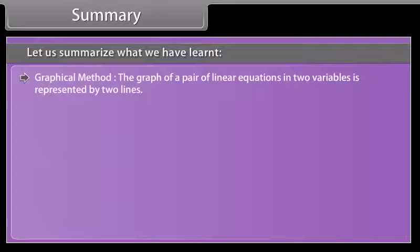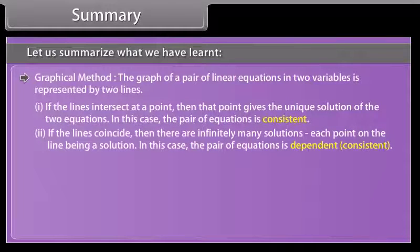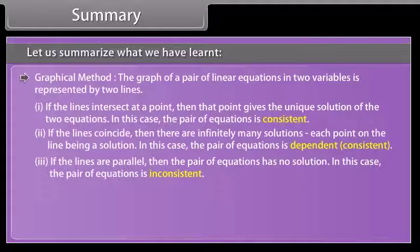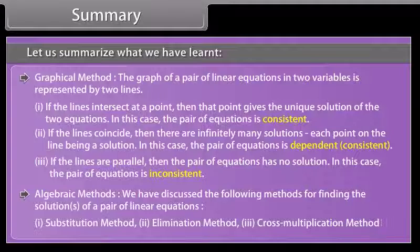The graph of a pair of linear equations is represented by two lines. 1. If the lines intersect at a point, that point gives the unique solution — the pair is consistent. 2. If the lines coincide, there are infinitely many solutions — the pair is dependent and consistent. 3. If the lines are parallel, the pair has no solution — the pair is inconsistent. Algebraic methods include: 1. Substitution method. 2. Elimination method. 3. Cross-multiplication method.